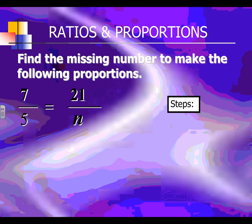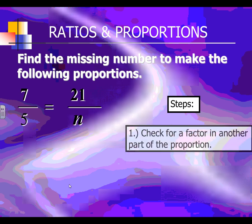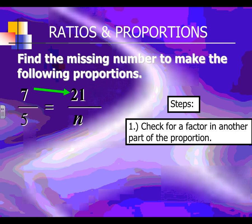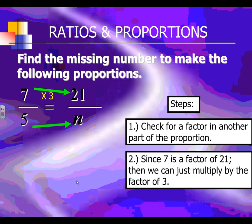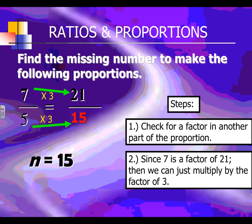Now let's get into solving proportions where you have a missing value. In this instance, we're missing the denominator underneath 21. One way to do this is just to look at factors — sometimes it's pretty obvious. For instance, 7 times 3 equals 21. Just multiply the denominator, the 5, by the same factor of 3. 5 times 3 is 15. So you get 21 over 15, and the value for N was 15.